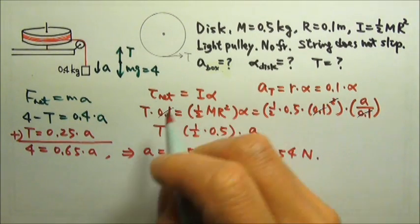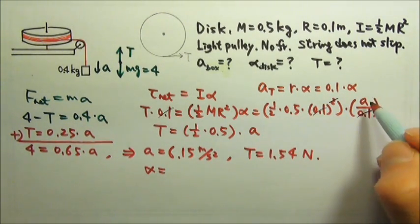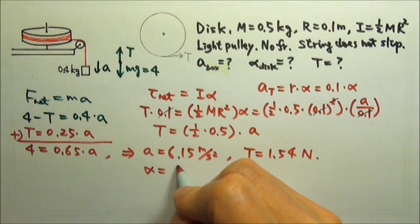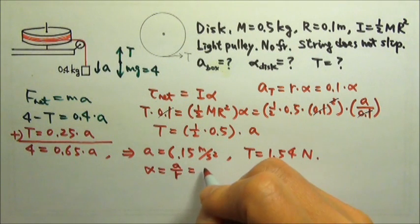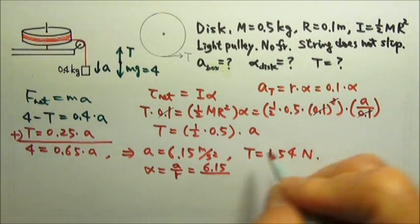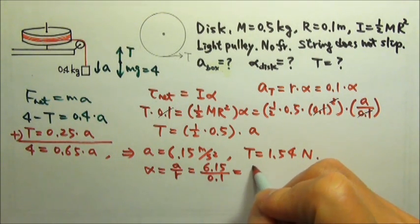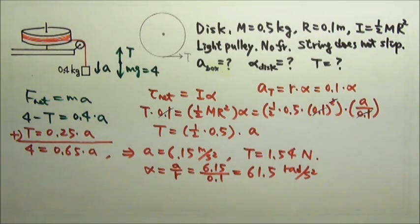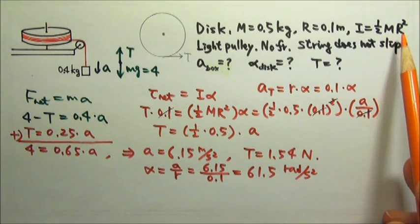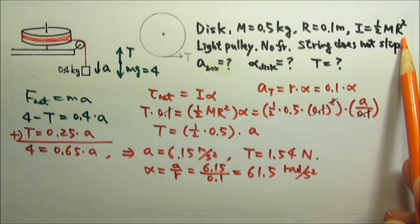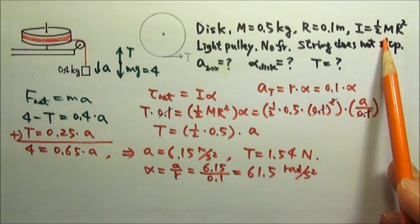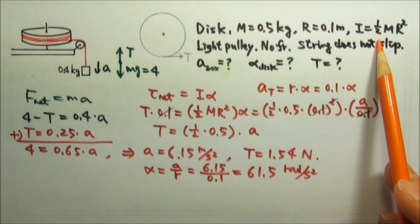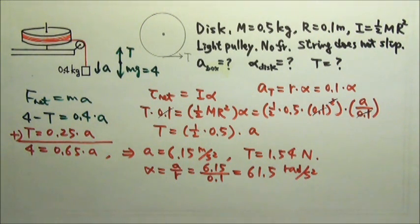To find alpha of the disc, we divide a by r: alpha = a / r = 6.15 / 0.1 = 61.5 radians per second squared. By the way, the rotational inertia formula of one-half mR squared is not something you need to memorize — equations differ for different special shapes and will be given on a test or AP exam. The only rotational inertia equation you need to memorize is for a point mass: I = mR squared.